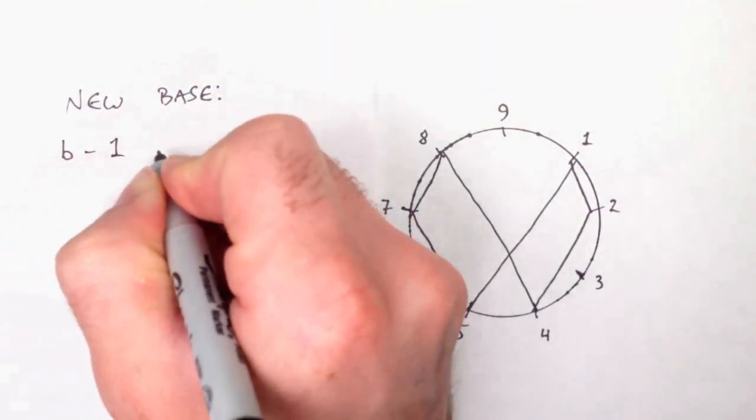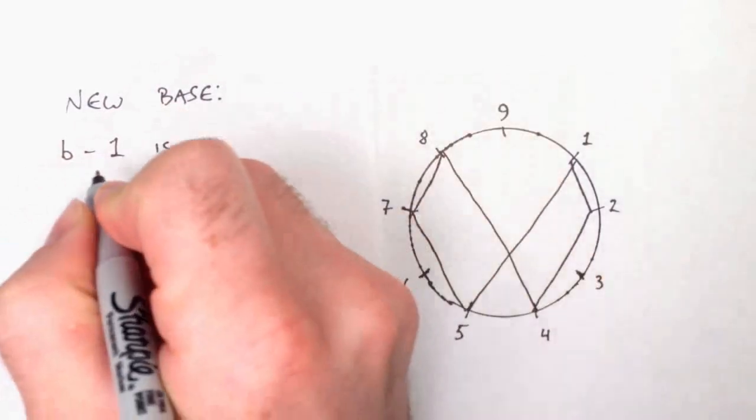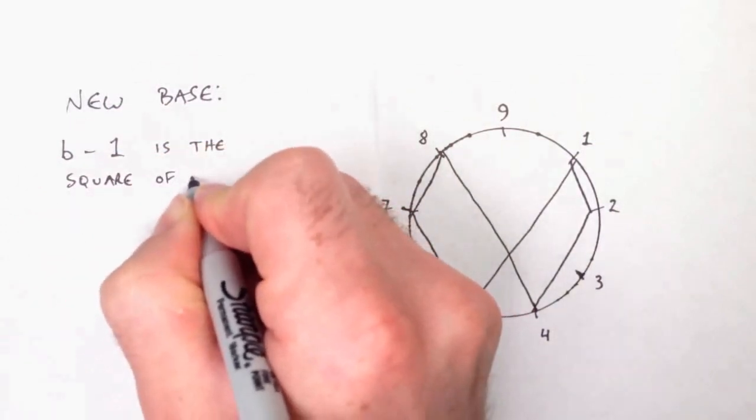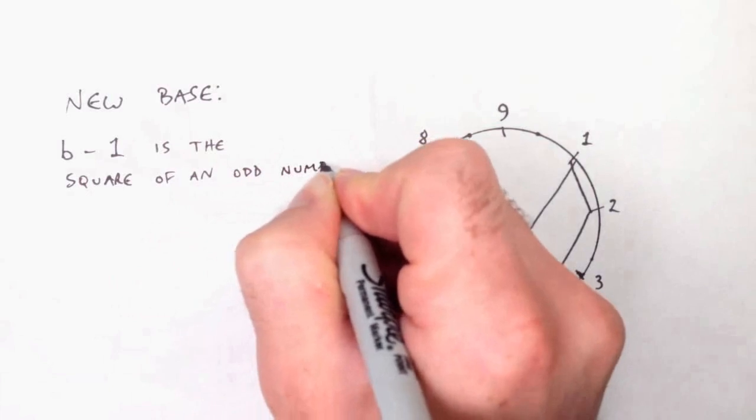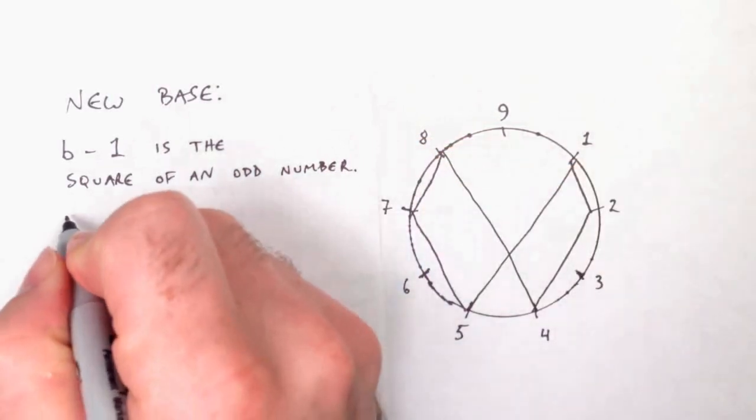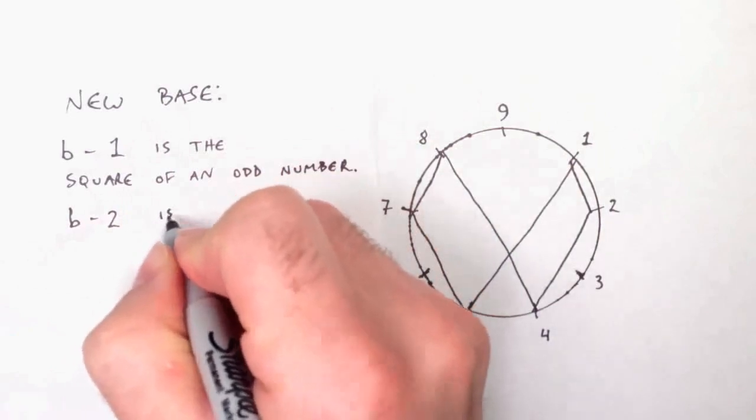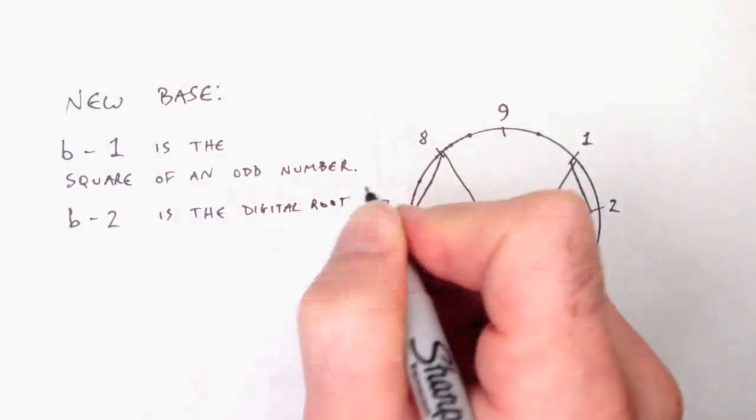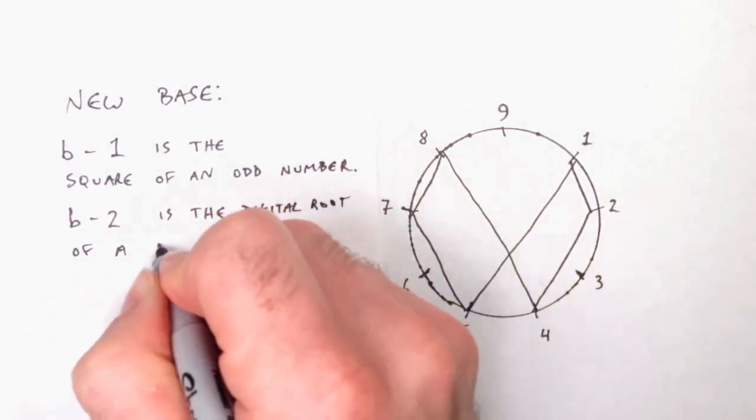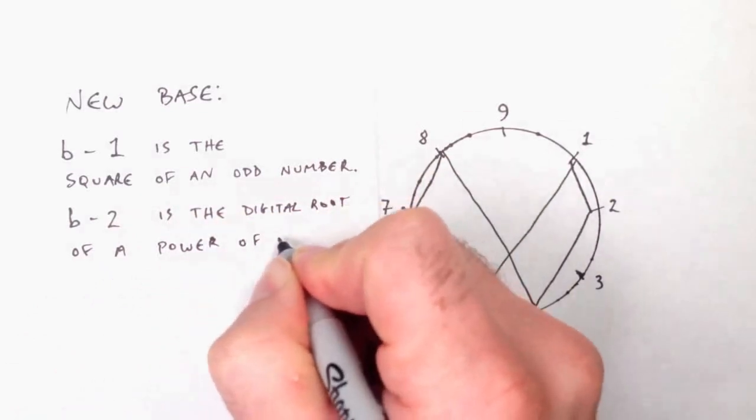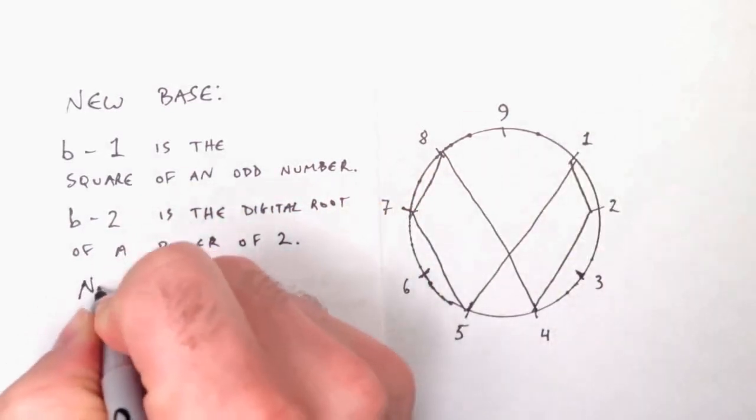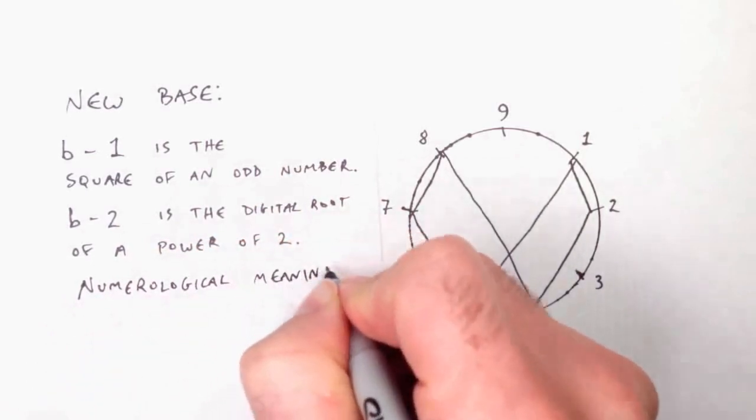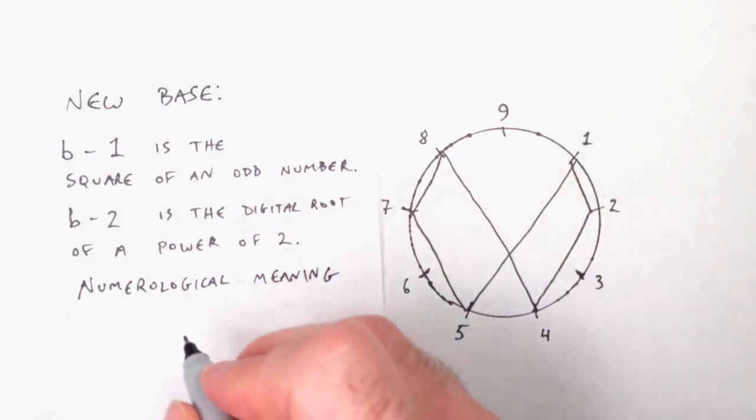Now we're going to play this again, but with a new base. Here's what it needs to have: one less than the base, the highest digit must be the square of an odd number. It must be an odd square. Just like nine is the square of three in the decimal system. The second highest digit, the base minus two, just like eight was the digital root of a power of two. In this new system, the second highest digit needs to be the digital root of the power of two. Lastly, it needs to have some kind of numerological significance so that it can take the place of vortex based mathematics.